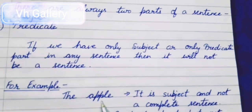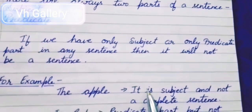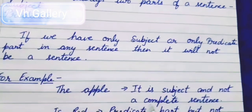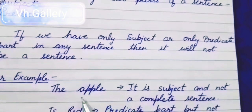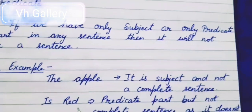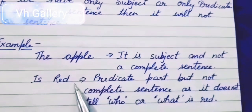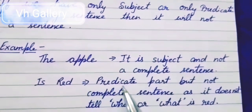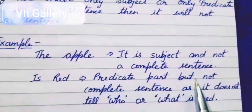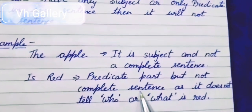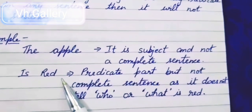For example, if we say 'the apple' — is that a sentence? No, it's not a sentence. It is a subject only and not a complete sentence. We don't know about the apple: what is it, what does it look like? Now take another part: 'is read.' 'Is read' is only words — it is only a predicate part. These are not sentences and don't make any complete sense.